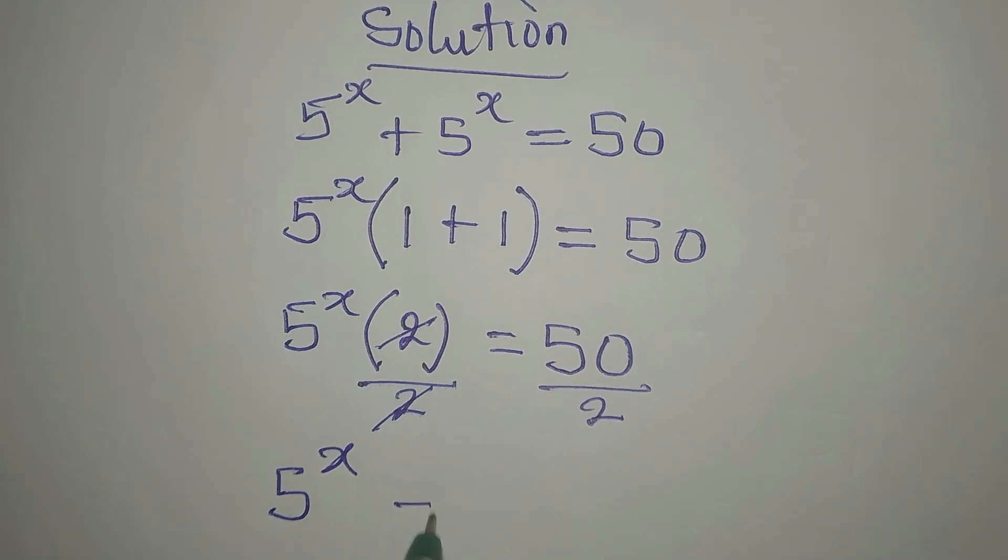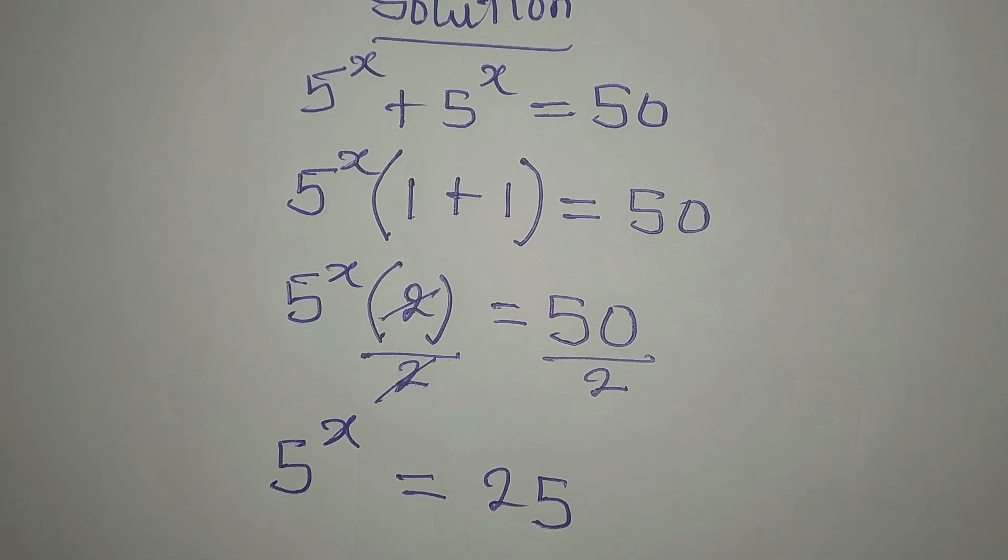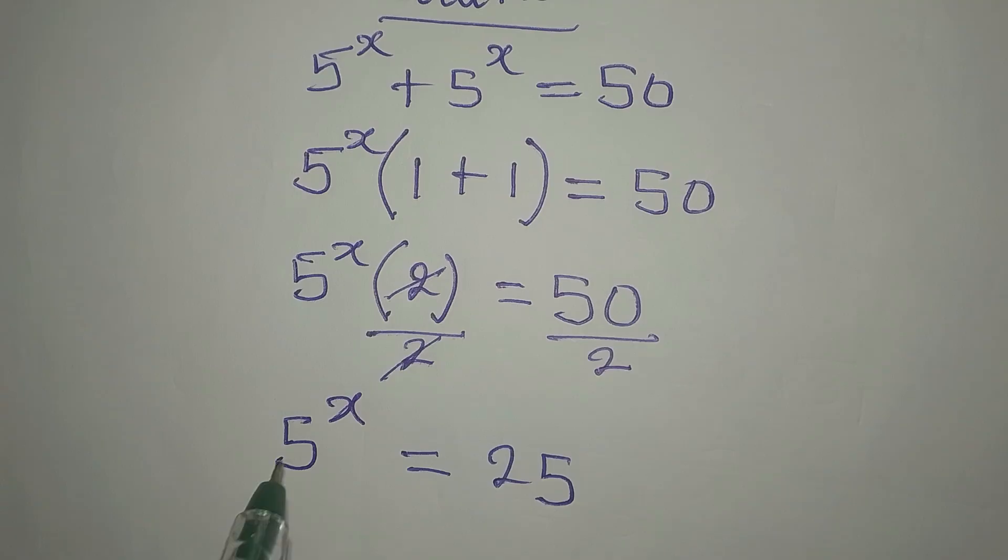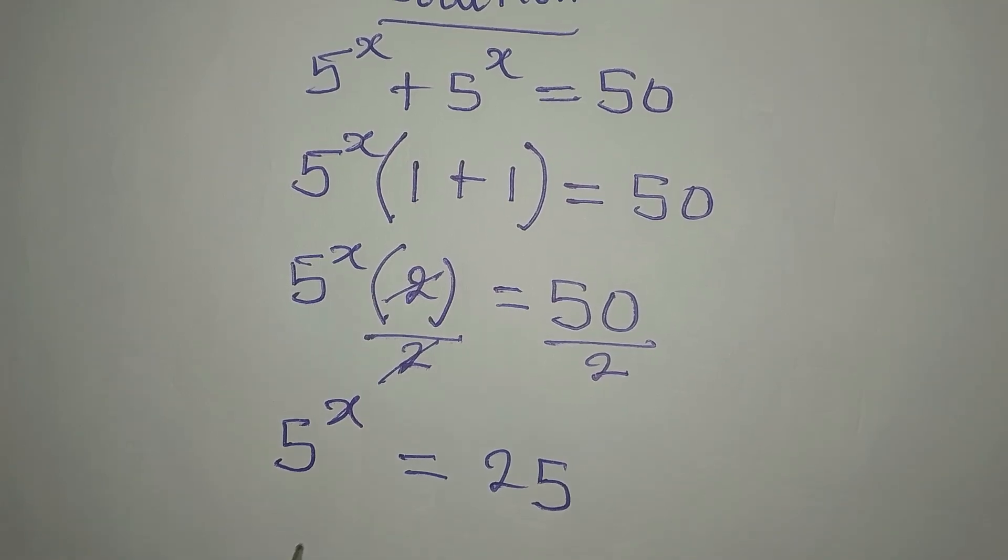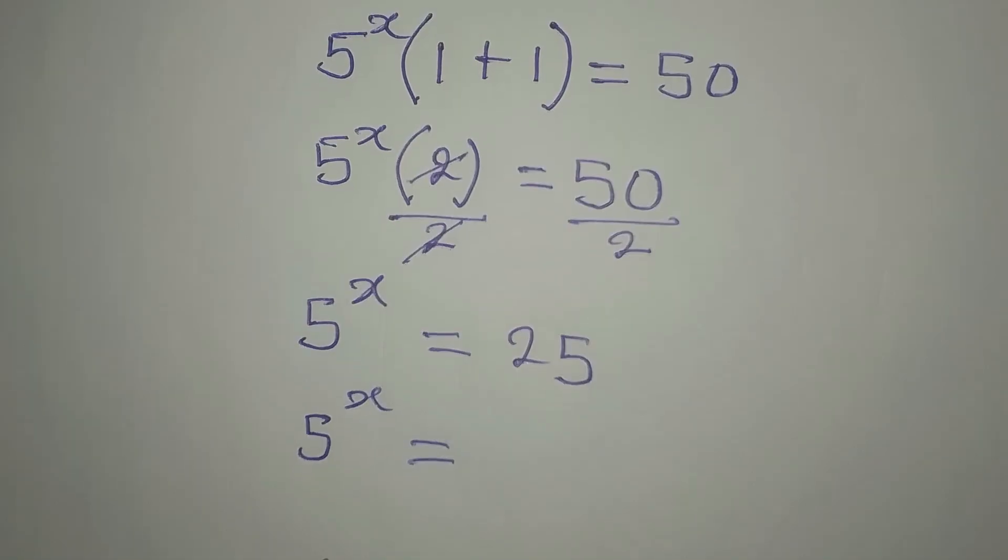So now we have 5 to the power of x equal to 25. Now you can see that this is even easier than some of you were thinking. Our next target is to make sure that this right here has the same base.